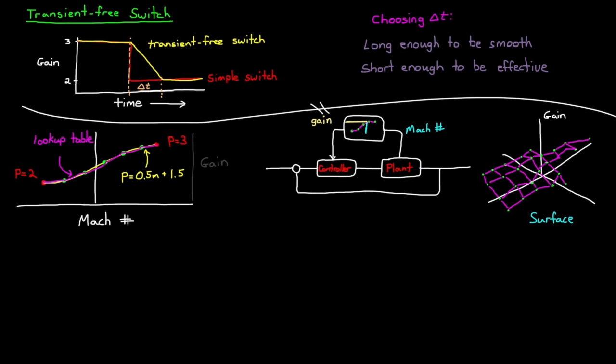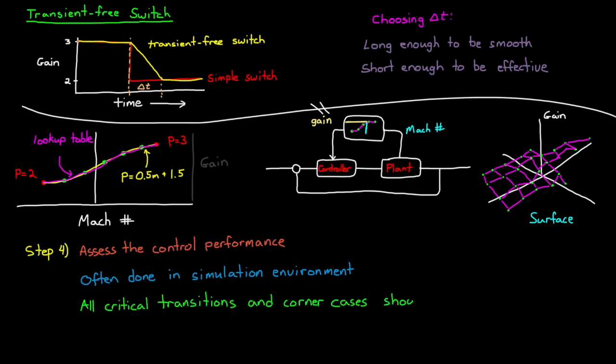Regardless of the architecture chosen, step four is critical. Assess the control performance across the whole operating envelope. This is often done with models and simulations because of the huge number of test conditions you need to run, and it's much faster if it's simulated. And since you can't guarantee performance away from the design operating points, choosing your test conditions, that's what you simulate and what you don't, is very important. You need to make sure all of the critical transitions and every potential corner case is covered.